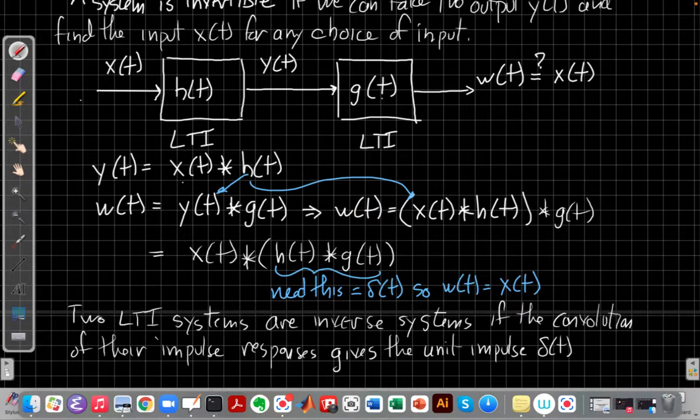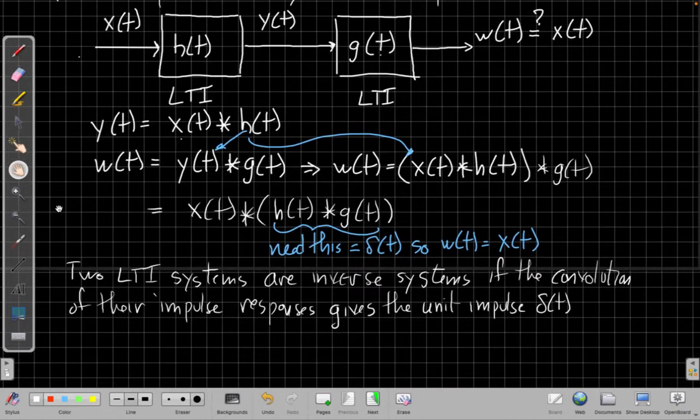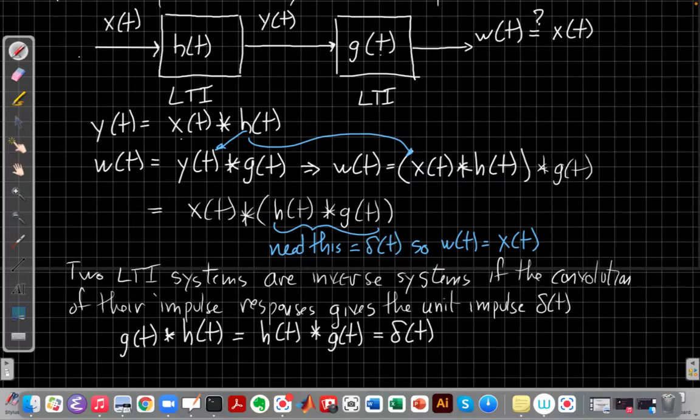Two LTI systems are inverse systems if the convolution of their impulse responses gives the unit impulse. We're putting equations on it, that g(t) convolved with h(t) is also equal to h(t) convolved with g(t), we know from the commutative property of convolution. Either one, either way I do the convolution, I have to get back just delta(t). So let's see an example of this.